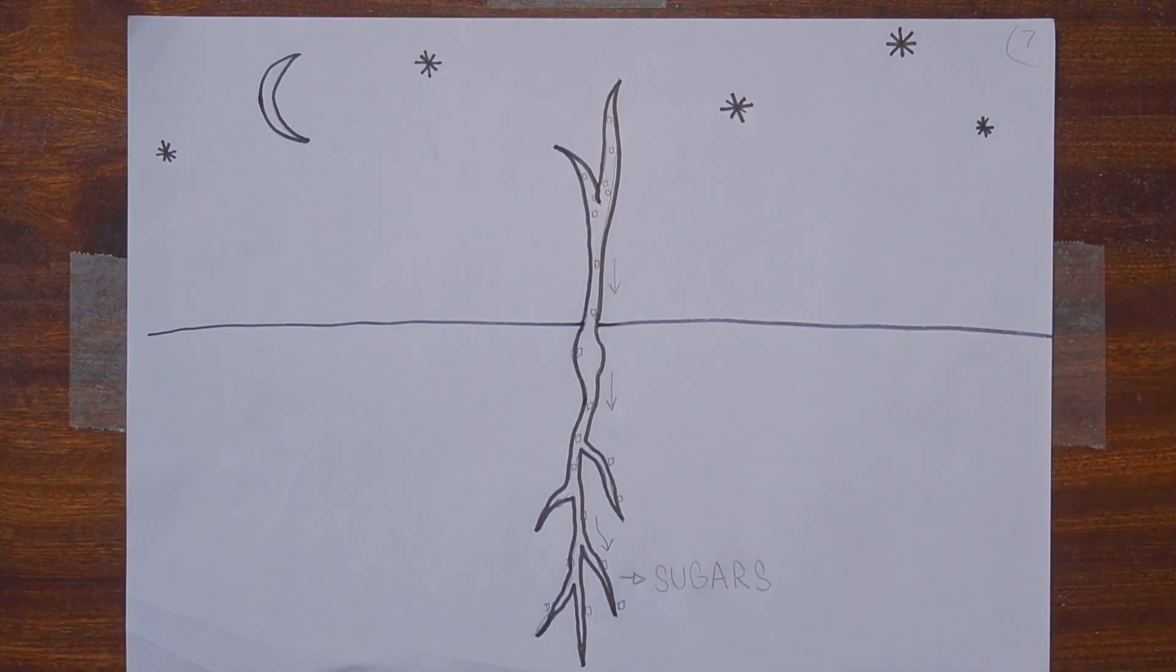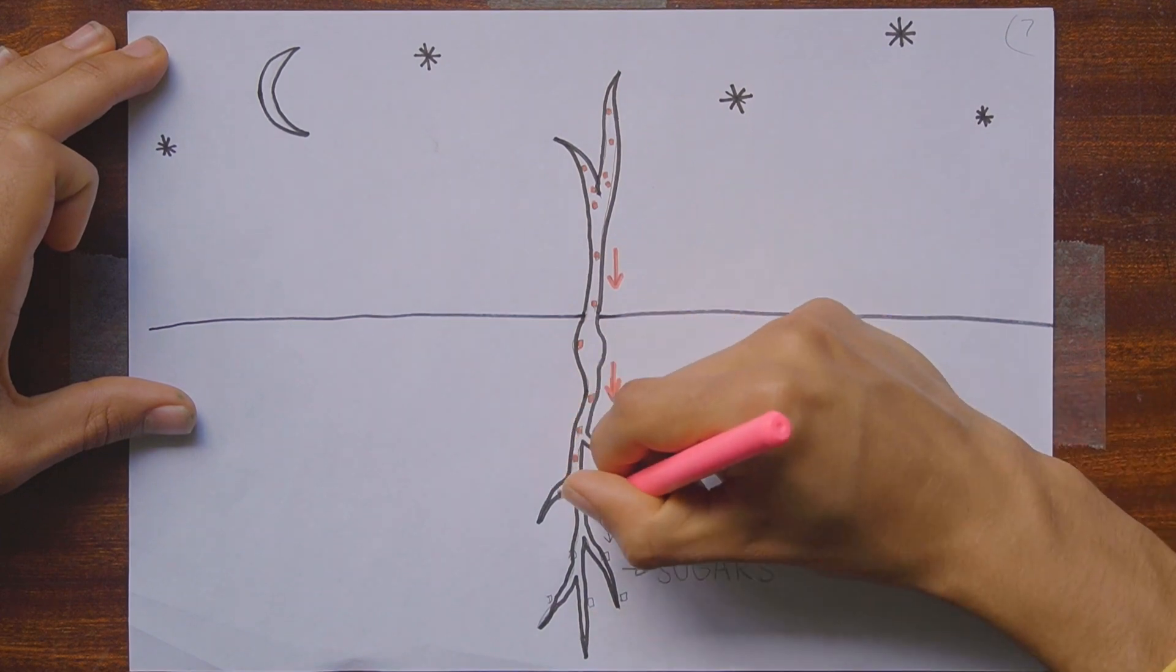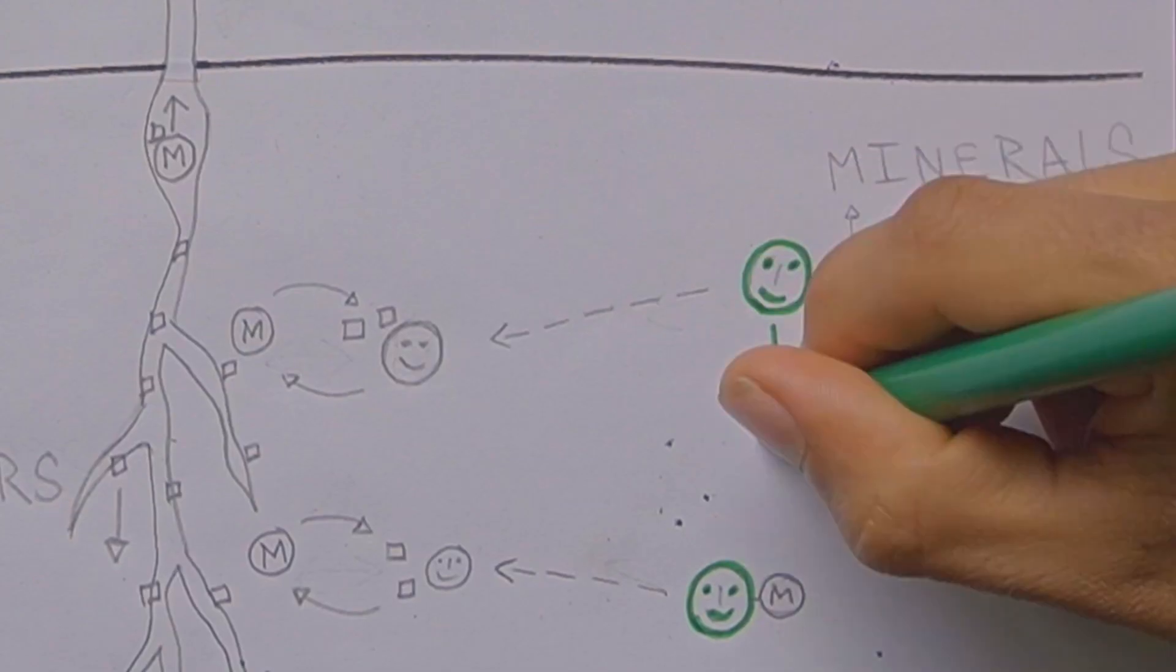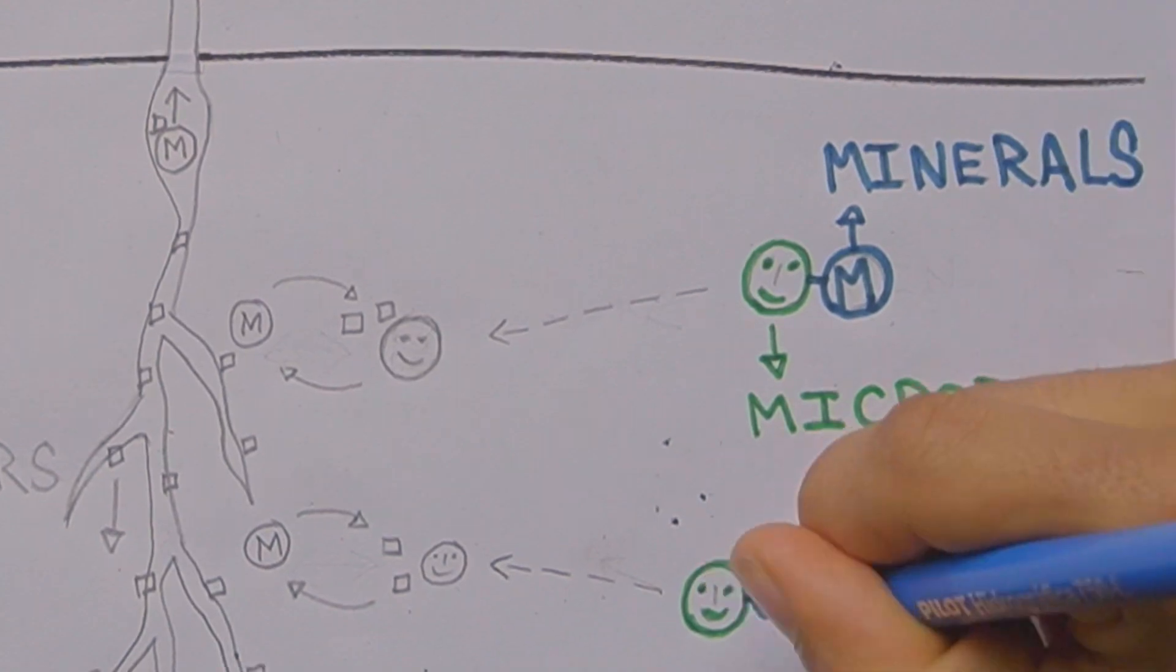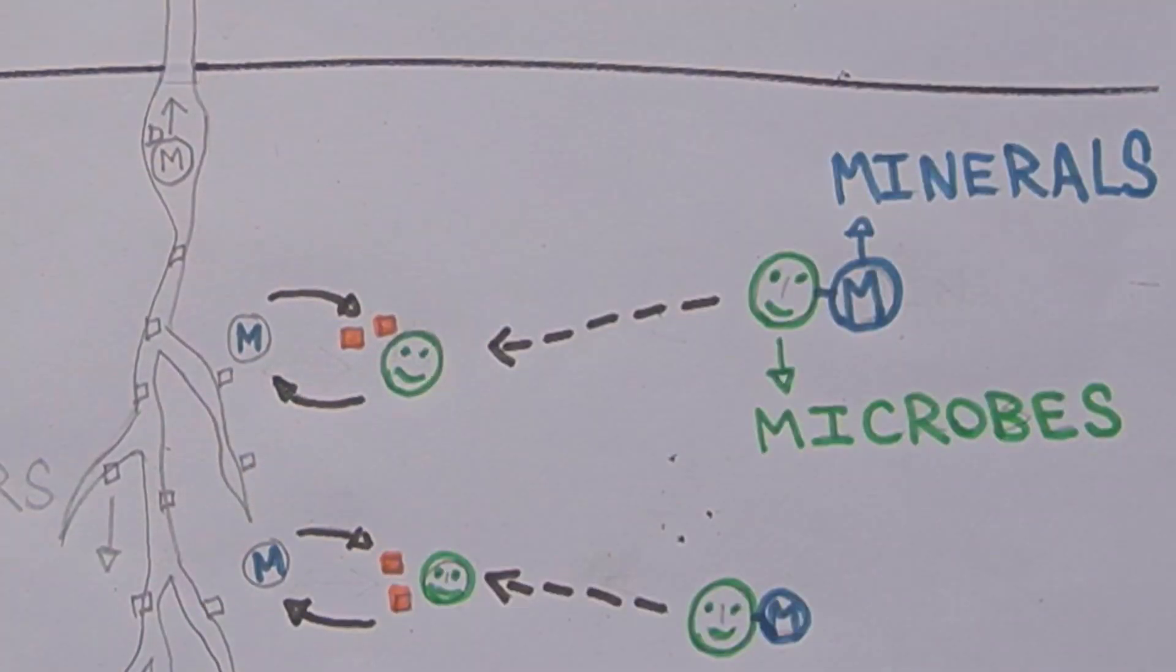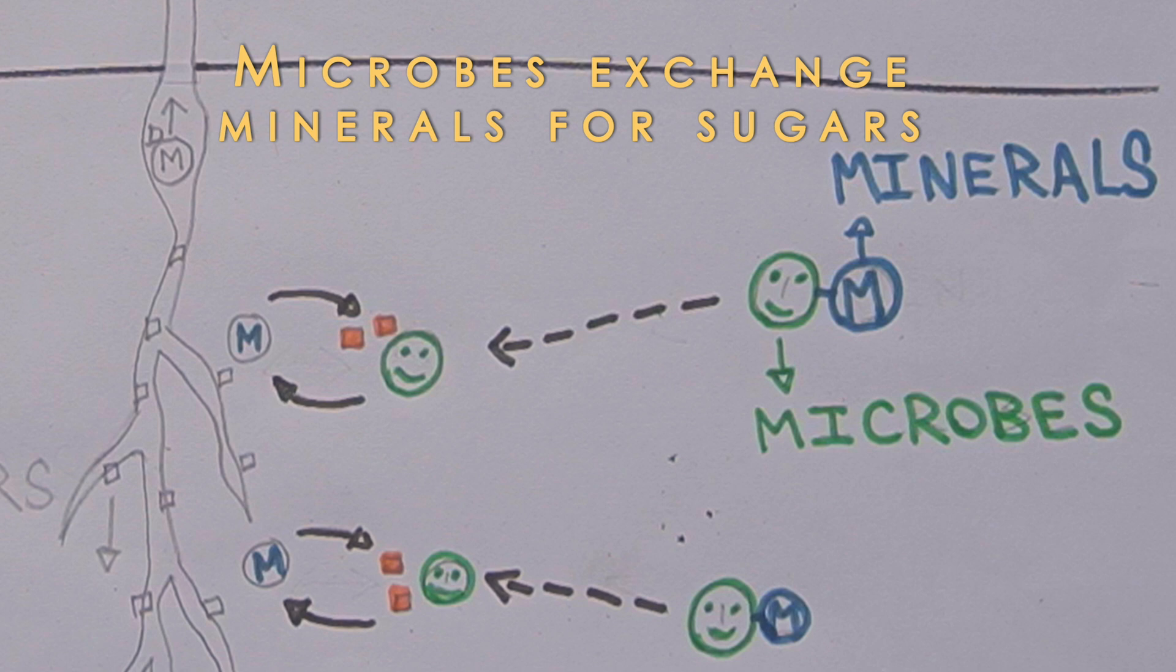Sixty to seventy percent of these sugars are sent out through the roots at night to feed the soil microbes. Microbes, especially fungi, trade and exchange minerals needed by the plant from outside the root zone for sugars made by the plant. Fungi live on these sugars.